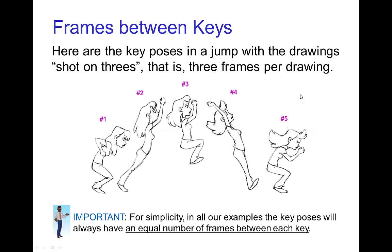Here's an example of that. Here's some key poses in a jump. Let's say that this was the set of keys for an animation that was shot on threes - that is, there's three frames between each drawing. So we have this first pose, and then three frames later the second one, three frames later the next one, and so forth.